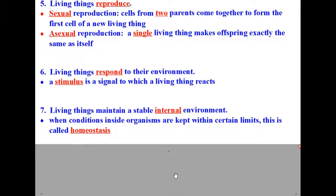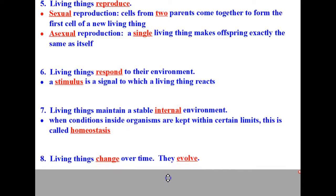The eighth and final characteristic that all living things have in common is that living things change over time — in other words, they evolve. Over generations, groups of living things evolve or change over time. Evolutionary change links all forms of life to a common origin more than 3.5 billion years ago. Evidence of this shared history is found in all parts of living things and fossils, from body parts to proteins to information in DNA. Check out this last video segment on bacteria evolving ways to move in a very short amount of time.